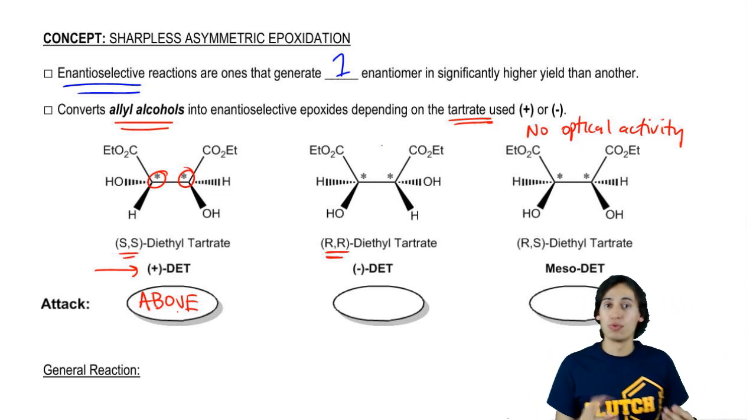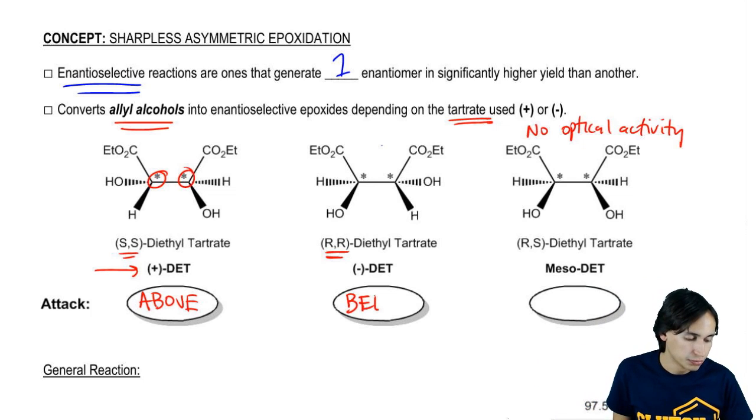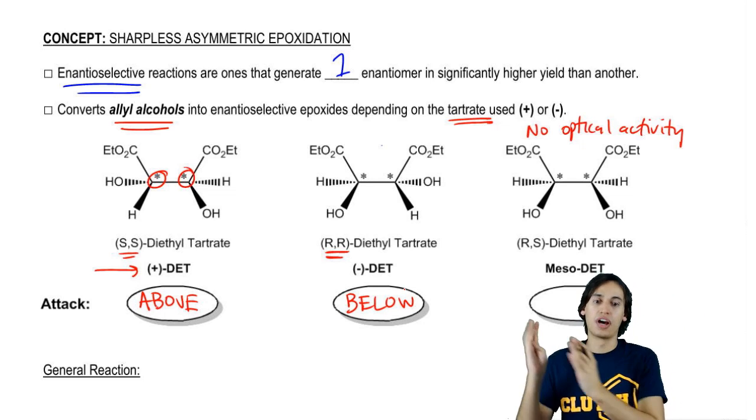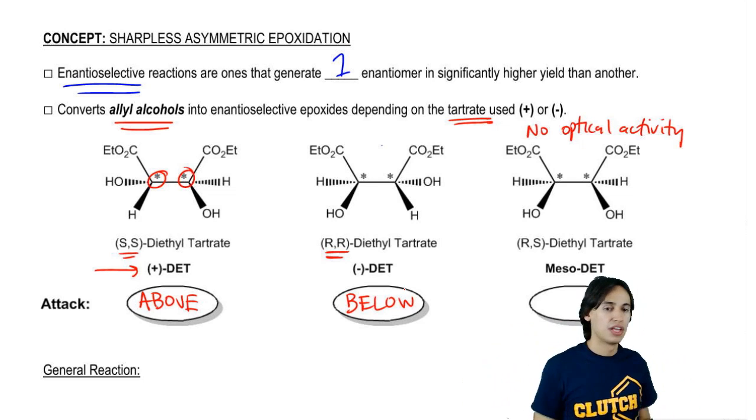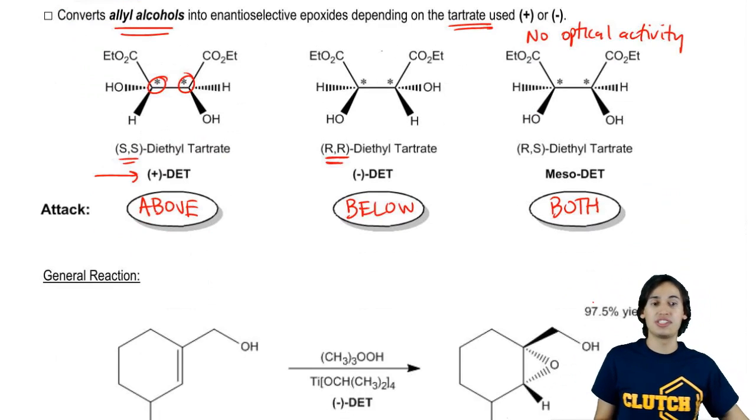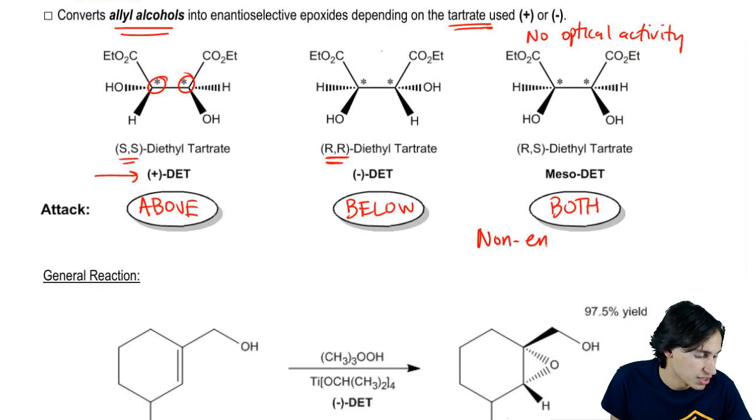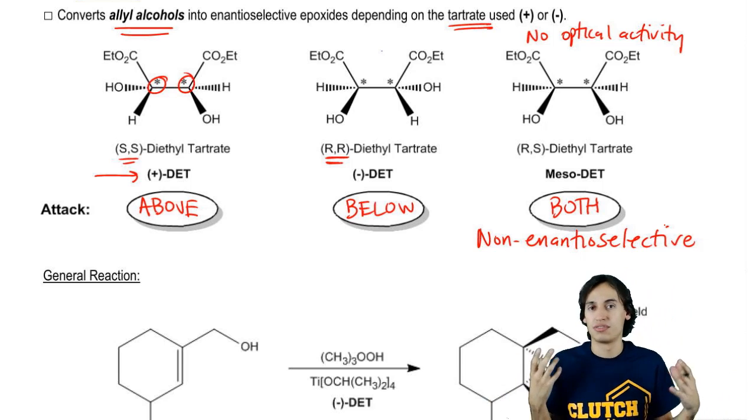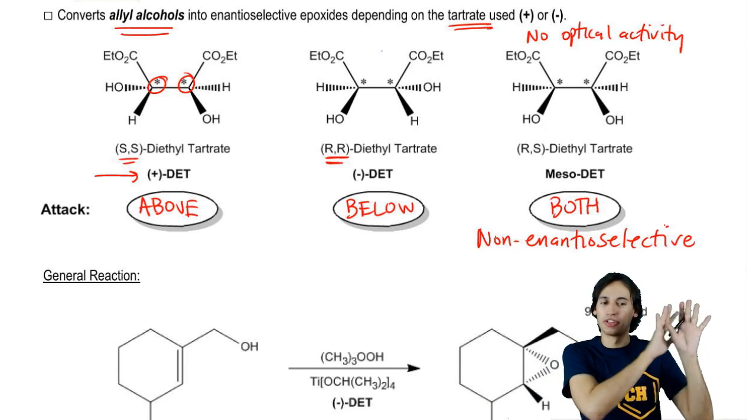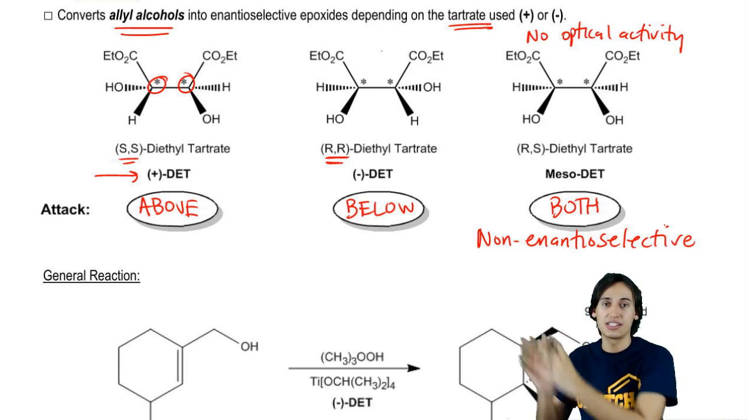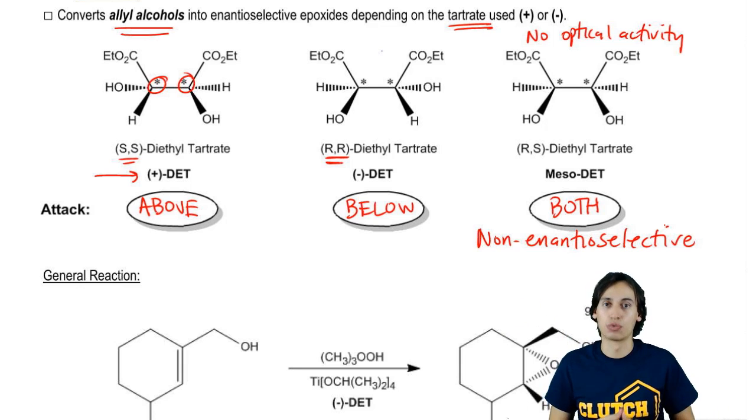Then we've got the negative one. The negative one is going to be the opposite, so it's going to attack from below. And we would expect the one from below to now form an epoxide below the double bond. So we've got positive is up, negative is down. That's really easy, right? Then we've got MESO. What do you think about MESO? Well, MESO would just be both. And the reason that MESO is both is because this one would be non-enantioselective. Because it doesn't have a preference of top or bottom, so it's just going to be a 50% chance. So really, we don't really care about the MESO one so much and we're not going to use that one synthetically. What we're going to use is positive DET and negative DET as our catalysts to form the upwards epoxide and the downwards epoxide.